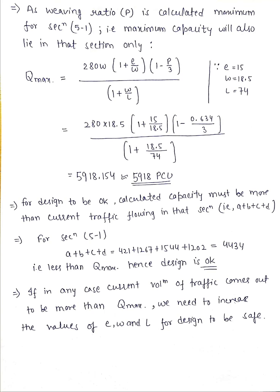But in case if capacity is less and traffic is more, means congestion is occurring in that section. In that case, what is the solution? We need to redesign the rotary with different values of E, W, and L. We need to increase the radius, the weaving width, and the weaving length of that rotary so that capacity should be increased.